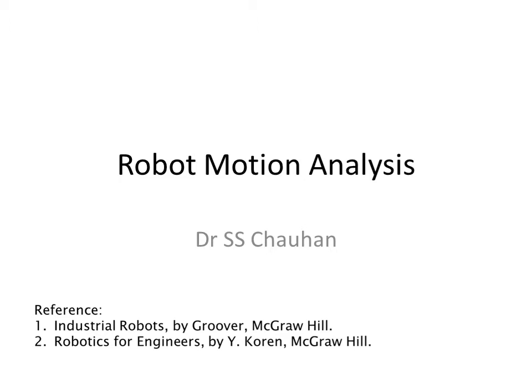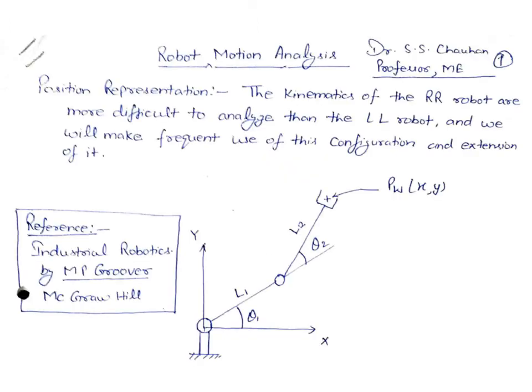When we think about the motion analysis of any mechanism, we have to calculate the position representation. Just like a four-bar or five-bar mechanism, we can analyze the position of the linkages in space using the Cartesian coordinate system and develop mathematical equations for the output link with reference to the input link.